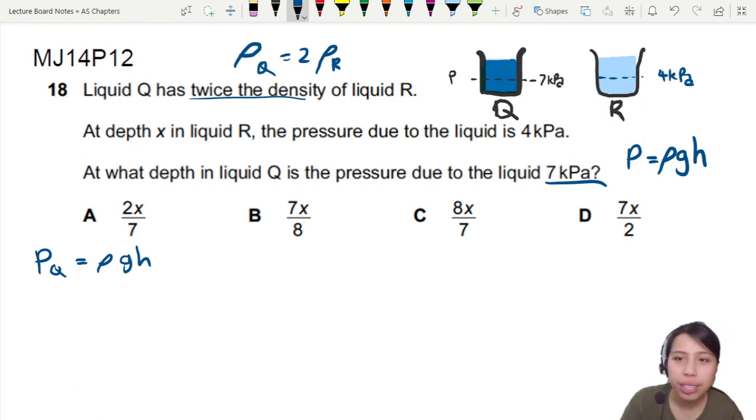Pressure at Q, we need it to be 7kPa. Density, I don't know. I'm just going to write rho Q here first. G, I do know that is a constant. So I'm just going to write as G. Height, don't know. But I do know I'm going to call it depth. Let's just use D. Because it's not later too many height. So D is what we need to find.